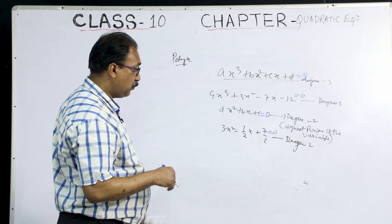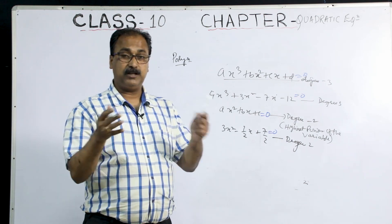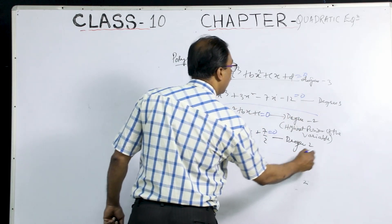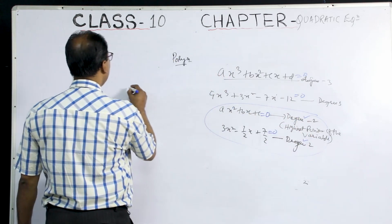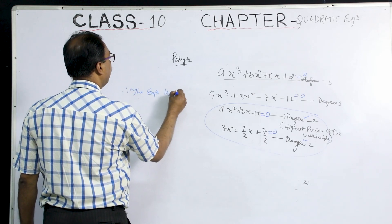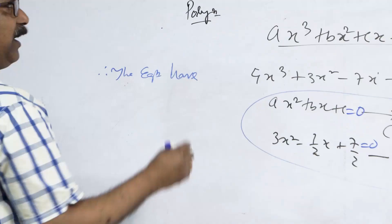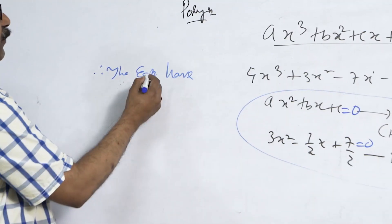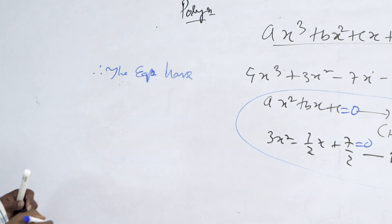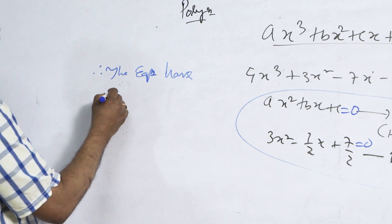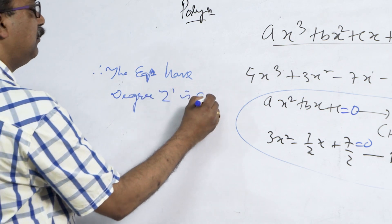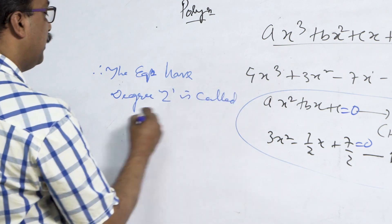If it is a polynomial without an equals sign, it is just a polynomial. When you say equal to 0 or equal to something, that is an equation. So the equations which have degree 2 — in short form we write 'eqn' — the equation of degree 2 is called a quadratic equation.